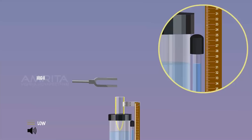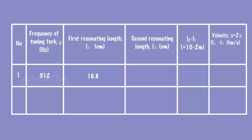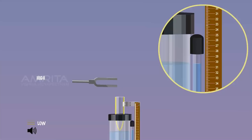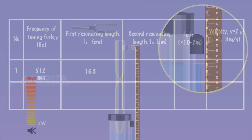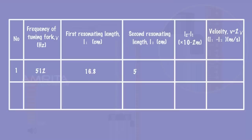Record the resonating length L1 in the tabular column. Vibrate the tuning fork again and place it over the tube. Raise the tube further to a height approximately equal to 3 times the previous height L1. Stop raising the tube when the maximum sound is heard and note the length of the air column at that position. Record the second resonating length L2 in the tabular column.